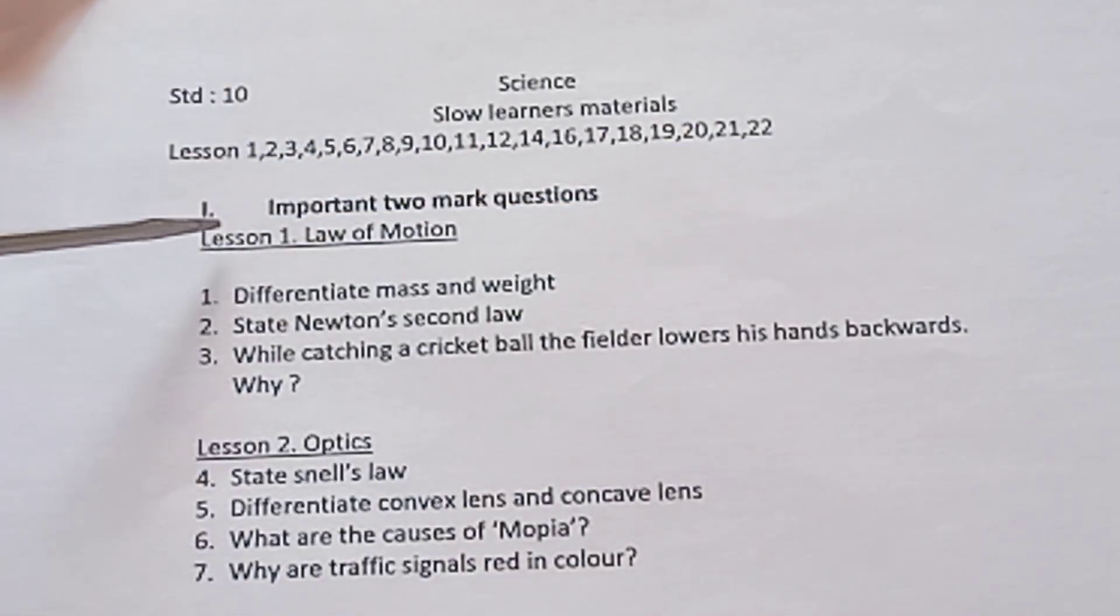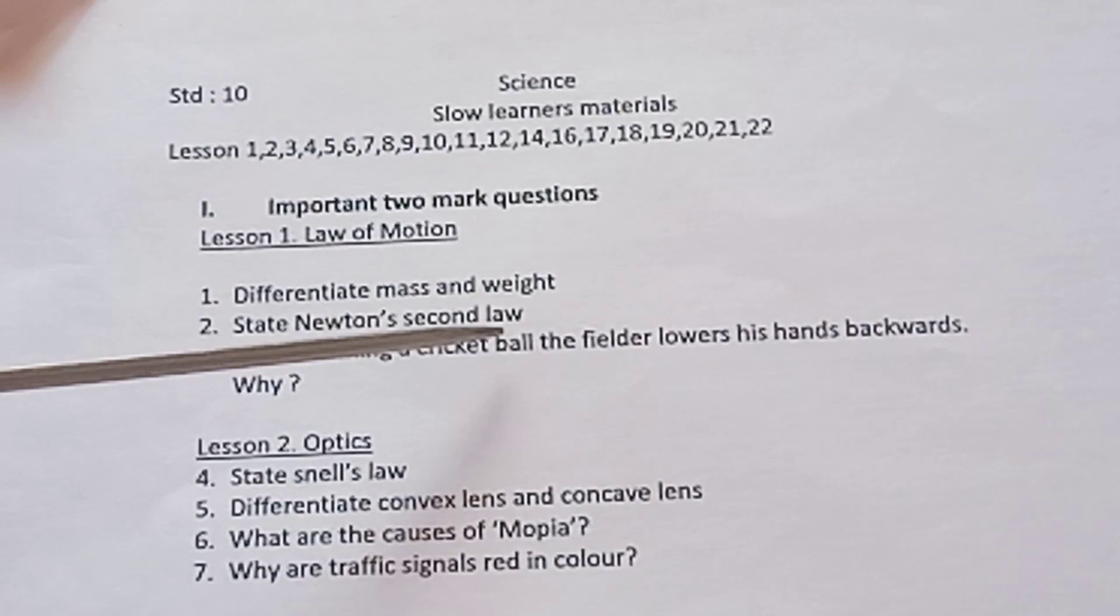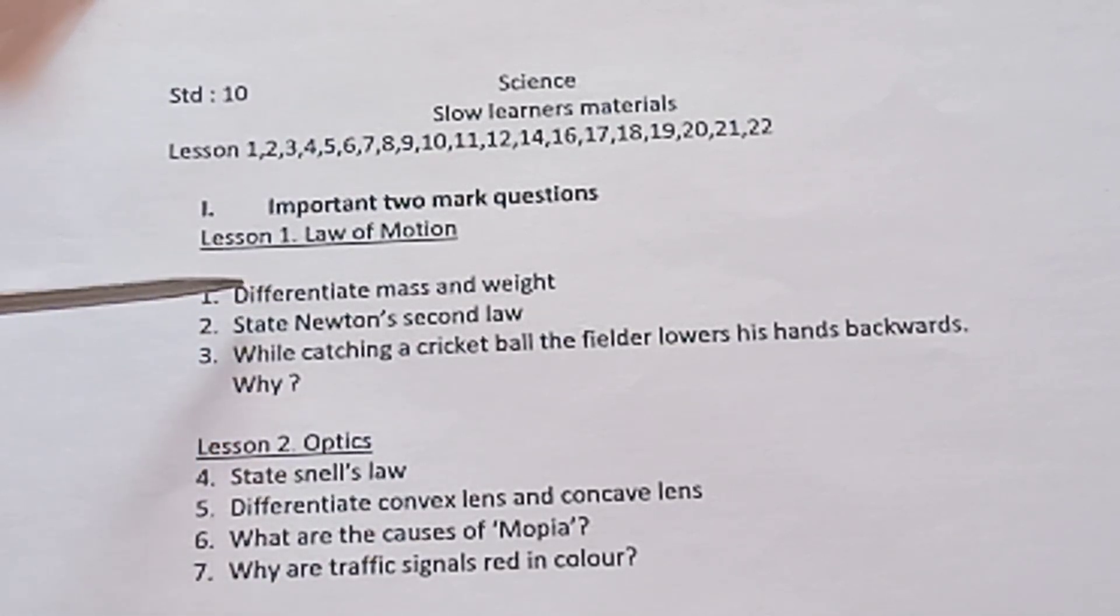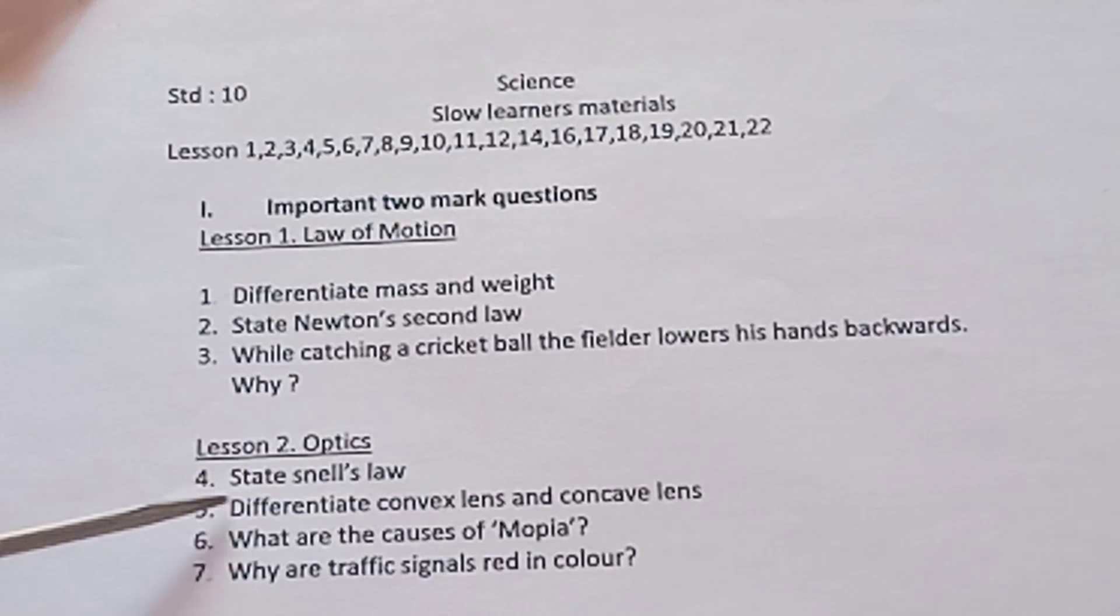First lesson, Law of Motion. Important 2 marks: First one, differentiate mass and weight. Second one, state Newton's second law. Third one, while catching a cricket ball, the fielder lowers his hands backwards. Why? These three questions are easier. Differentiate mass and weight in tabulation. Newton's second law, you have to write the equation.